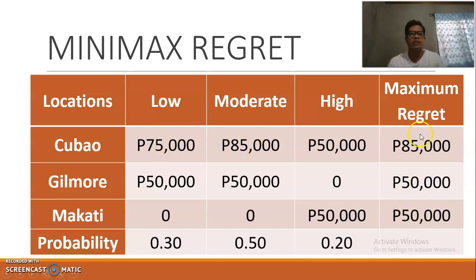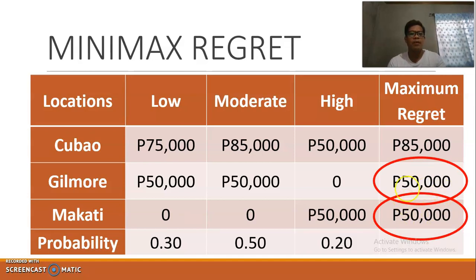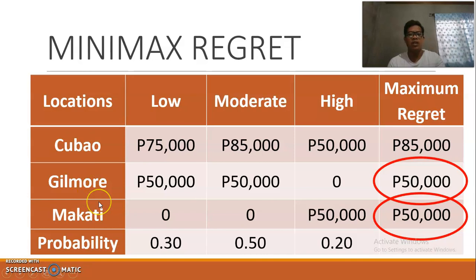After computing the regret table, we find the maximum regret for each alternative: for Cubao it is 85,000; for Gilmore 50,000; for Makati 50,000. We then take the minimum among the maximums. Since Gilmore and Makati are tied at 50,000, the company would open a new branch at either Gilmore or Makati.